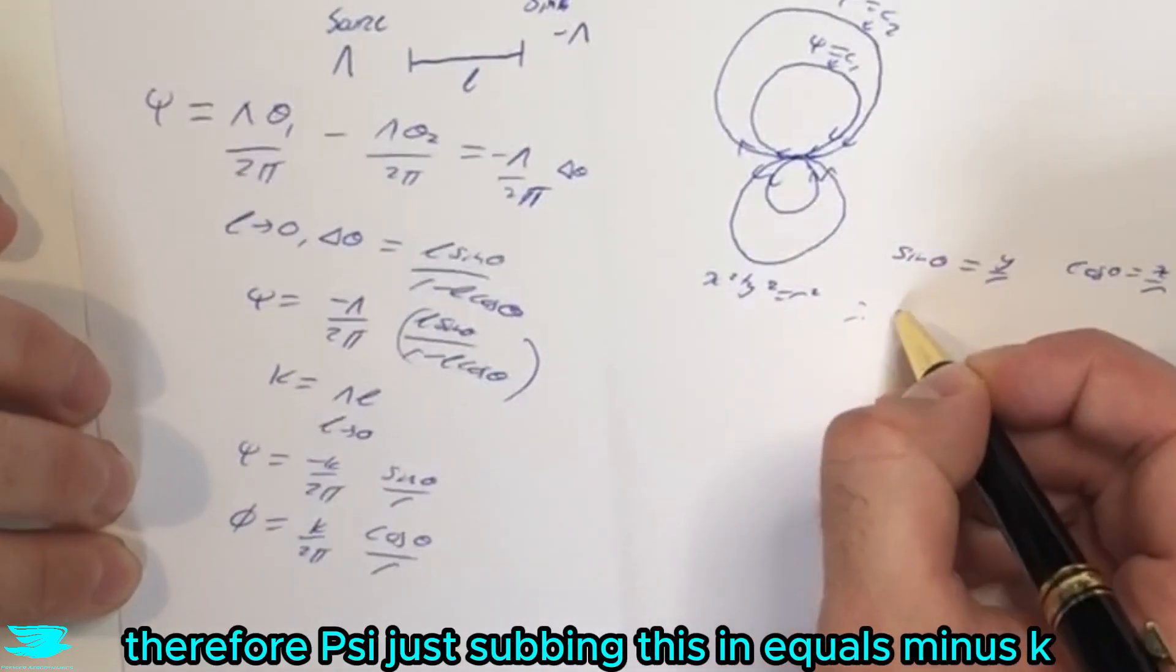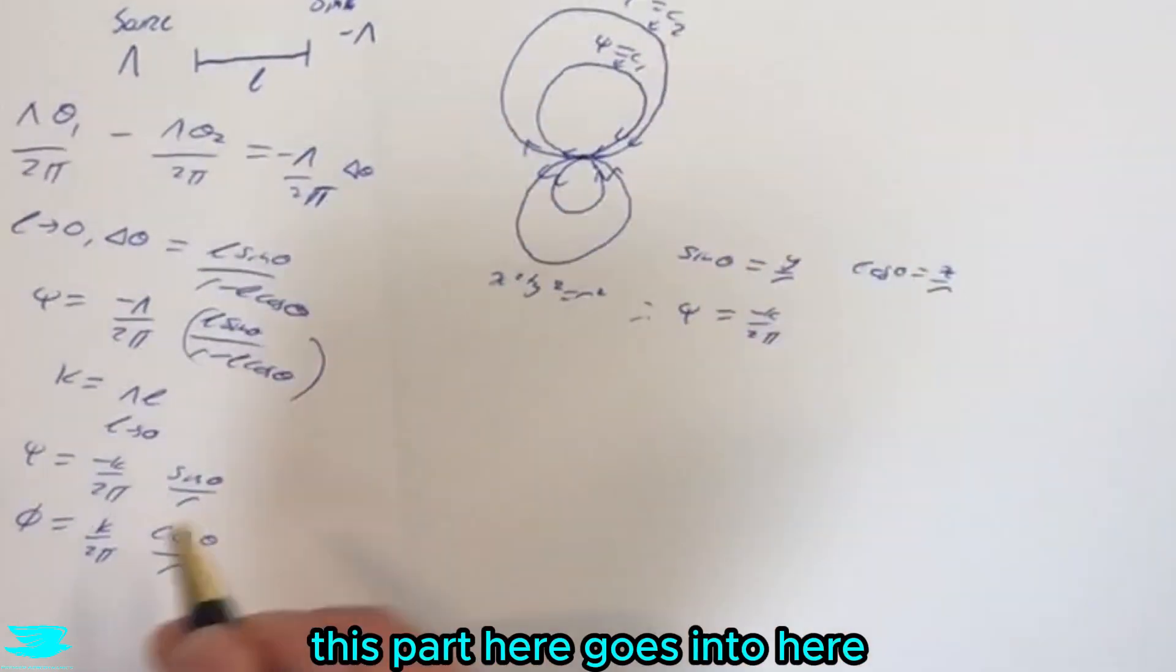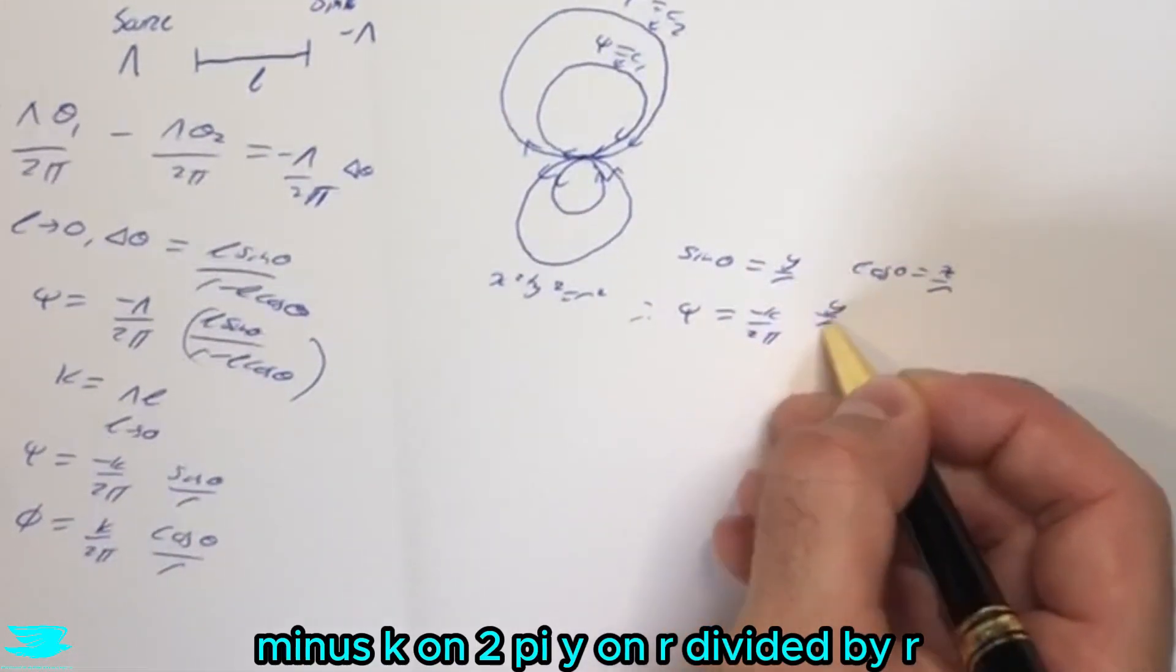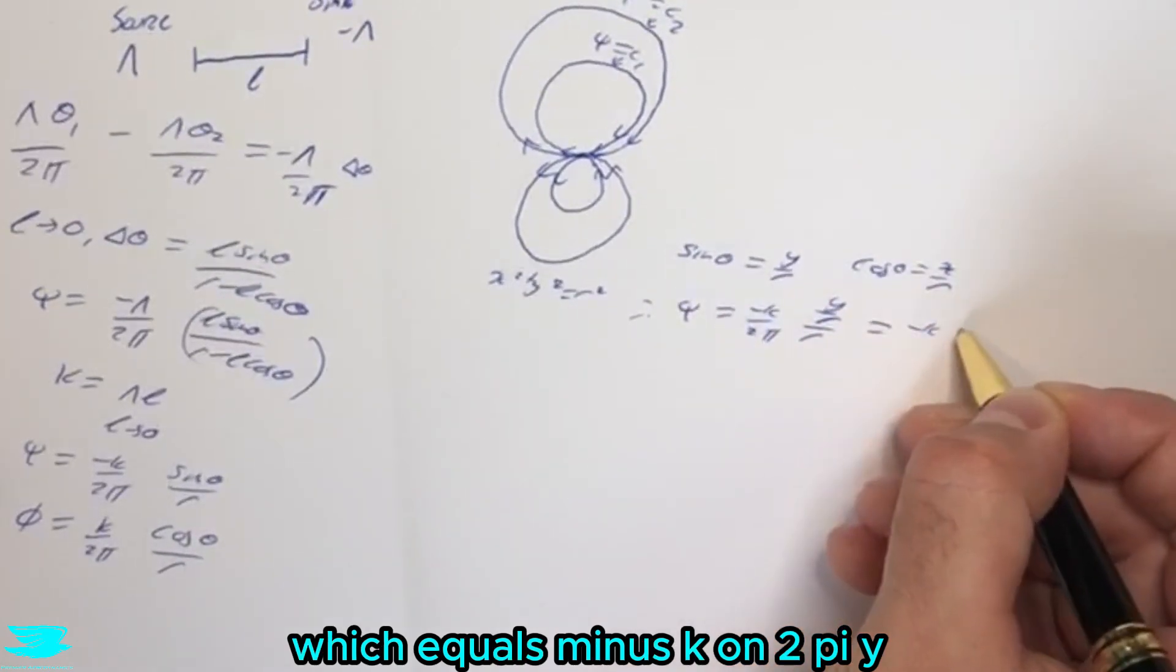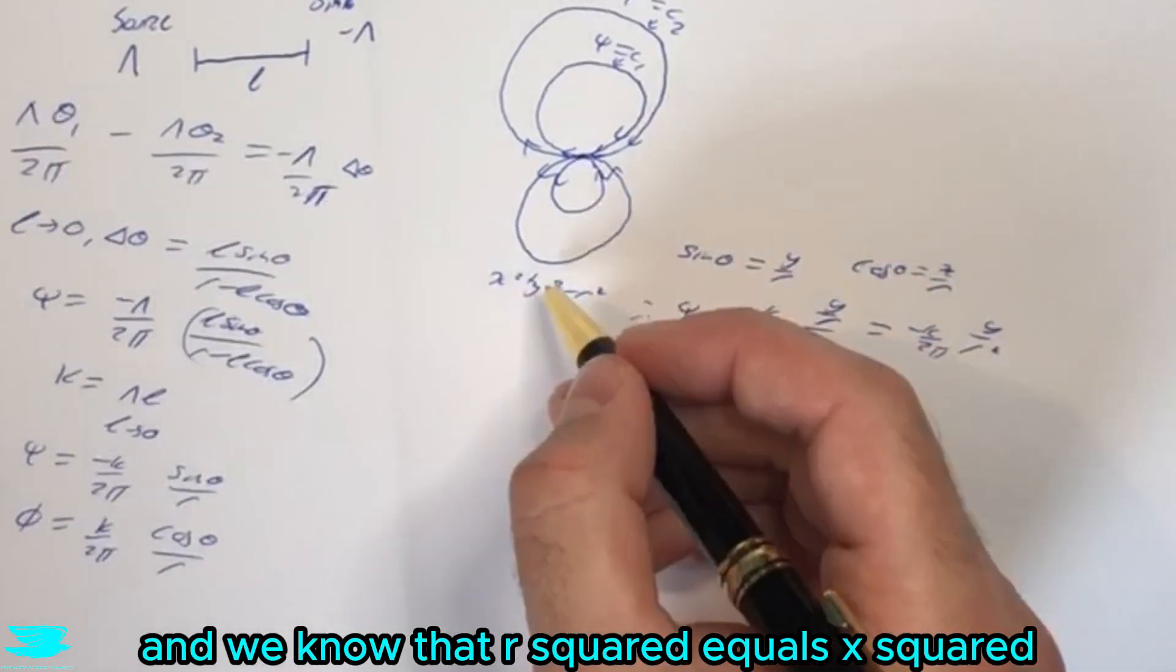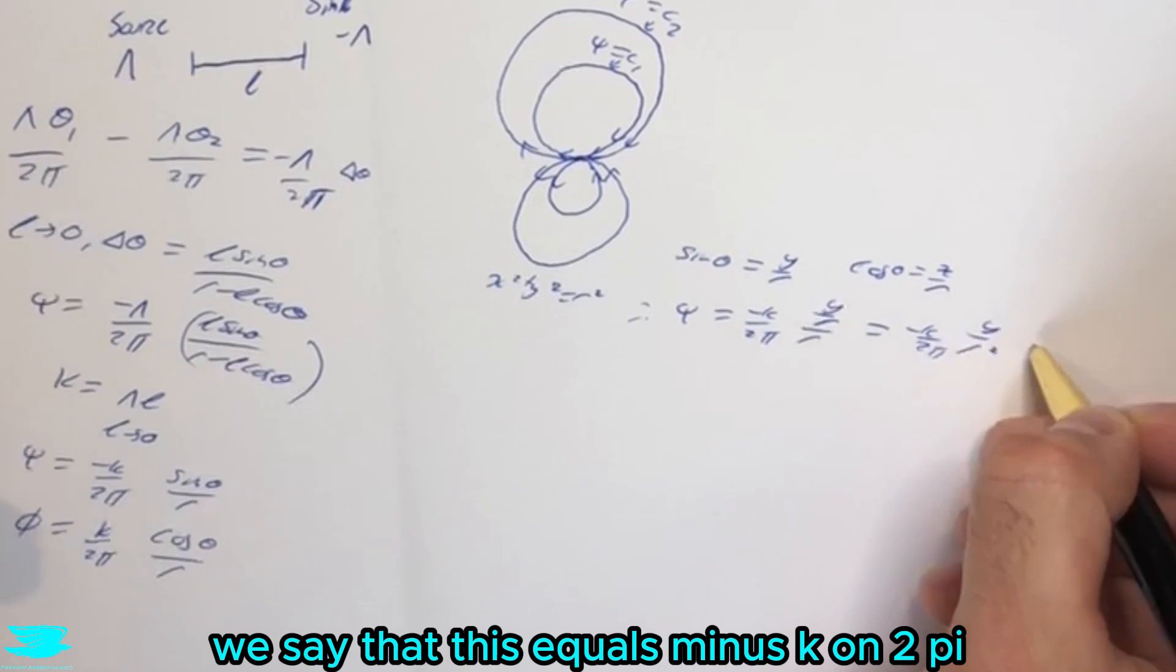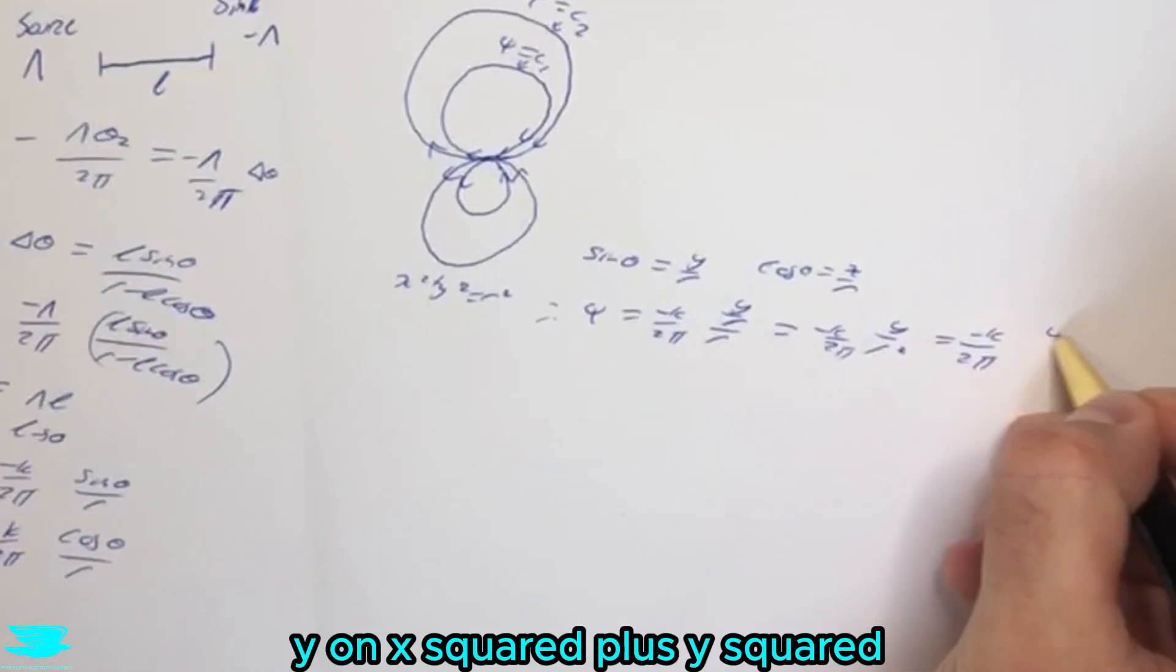Therefore, psi, just subbing this in, equals minus k, this part here goes into here, minus k on 2 pi, y on the r, divided by r, which equals minus k on 2 pi, y divided by r squared. And we know that r squared equals x squared plus y squared. Therefore, we say that this equals minus k on 2 pi, y on x squared, plus y squared.